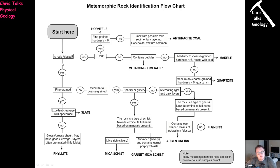If our rock is not foliated, what are our options? Is it dark? If it's dark and fine-grained with a hardness greater than six — lots of hard minerals — then it's going to be a hornfels. If our rock is dark but not harder than six, and it displays layering and conchoidal fracture — a scallop-shaped fracture surface — then it's going to be anthracite. Anthracite is going to be very shiny as well — it's a naturally shiny rock.